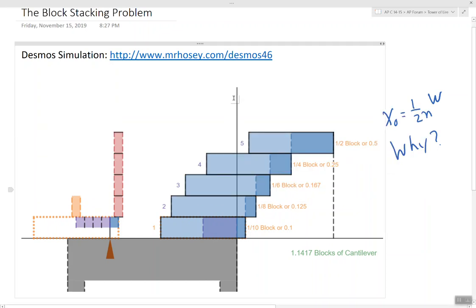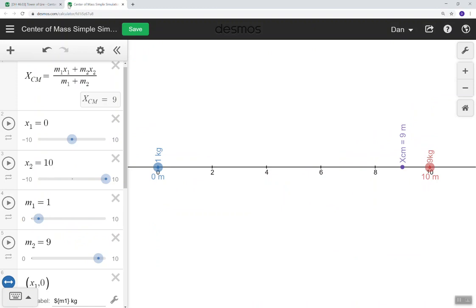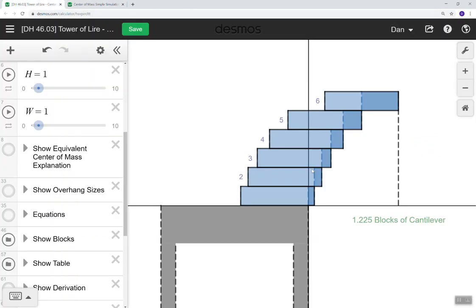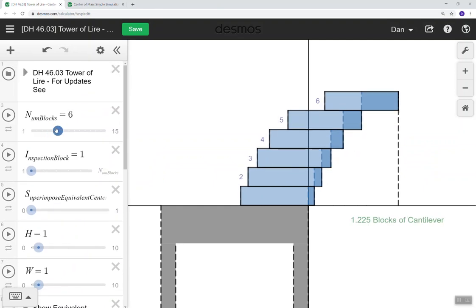And by the way, if you want to get to the simulation, you can click on this link here. Well, I guess you can't click, but MrHosey.com slash Desmos46 will pull up the following simulation. And these are the bricks, and it's kind of neat because you can change the number of blocks really easily.